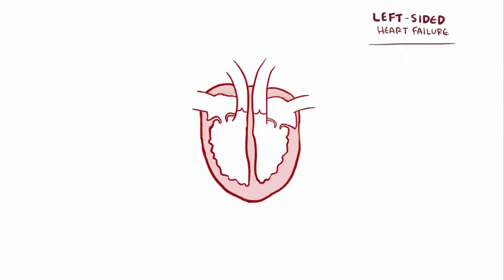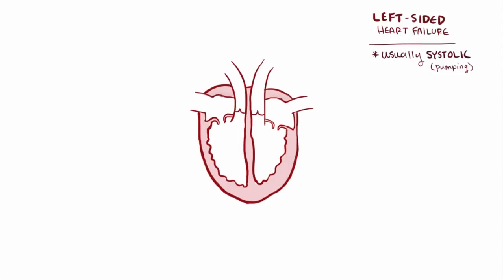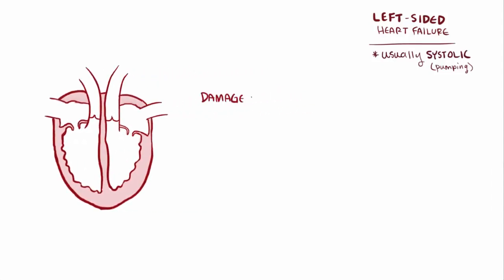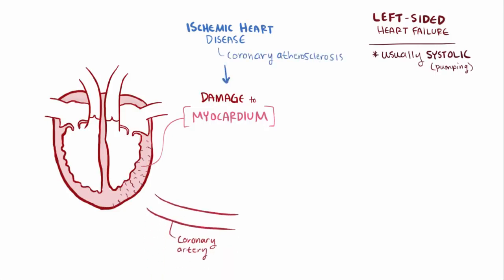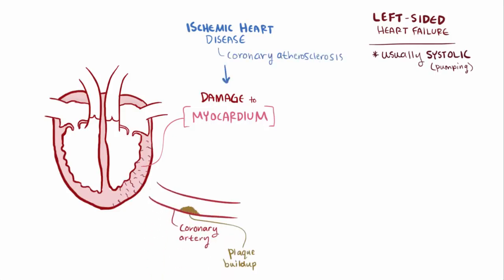Usually left-sided heart failure is caused by systolic or pumping dysfunction, typically due to some kind of damage to the myocardium, or the heart muscle, which means it can't contract as forcefully and pump blood as efficiently. Ischemic heart disease caused by coronary artery atherosclerosis or plaque buildup is the most common cause. In this case, less blood and oxygen gets through the coronary artery to the heart tissue, which damages the myocardium. Sometimes if the coronary is blocked completely and that person has a heart attack, they might be left with scar tissue that doesn't contract at all, which again means that the heart can't contract as forcefully.